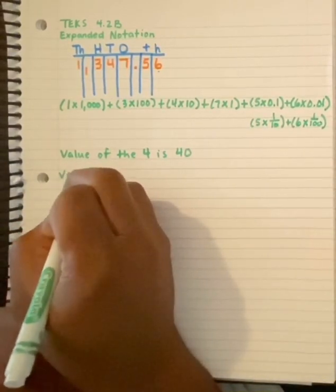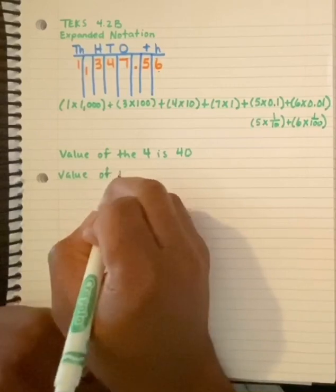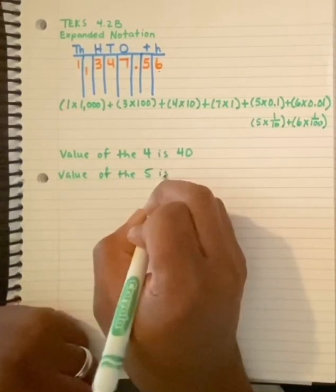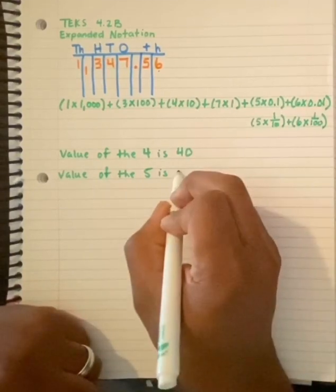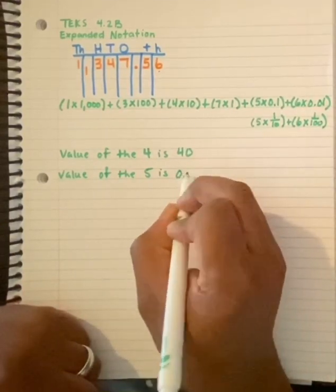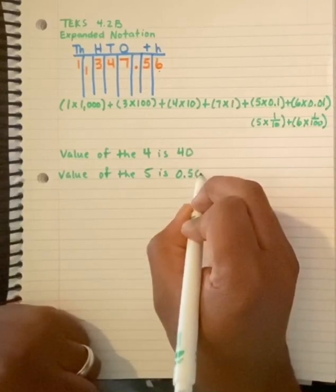Or what would be the value of five dimes? Well, value of the five is five dimes. If I had five dimes, that would equal to five tenths or 50 cents.